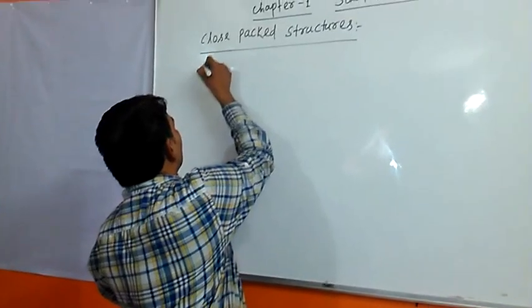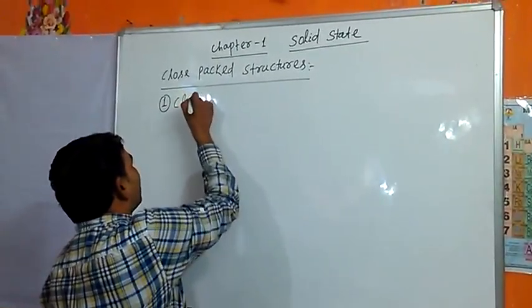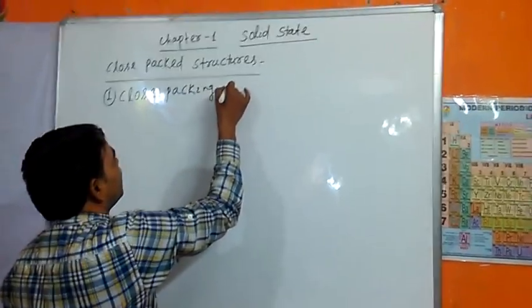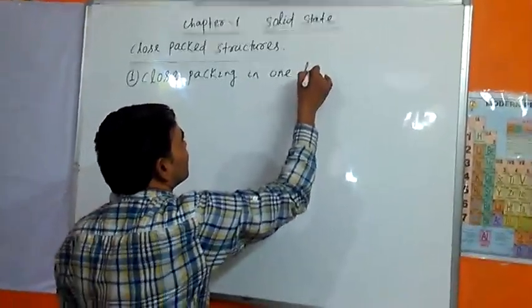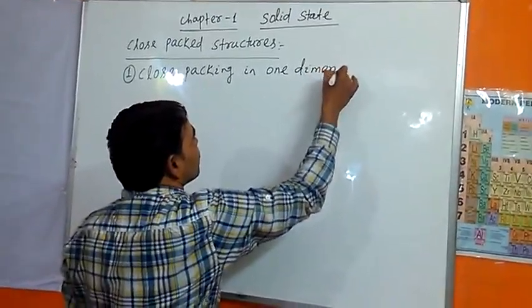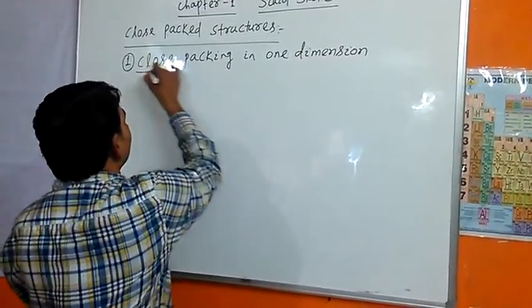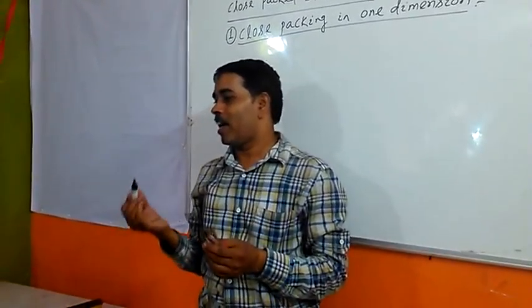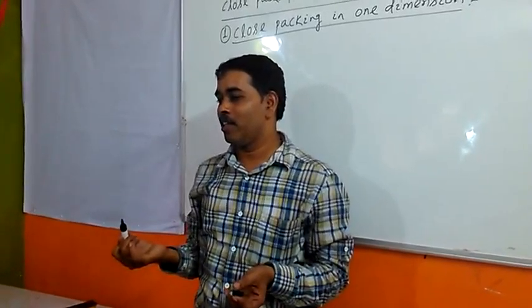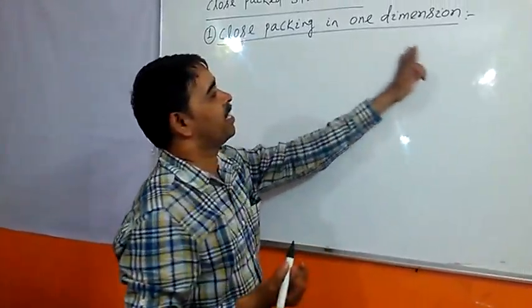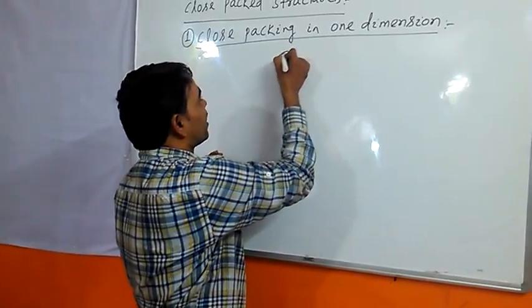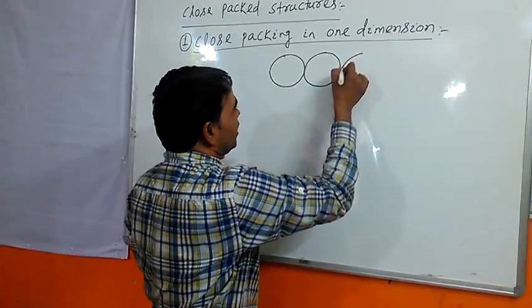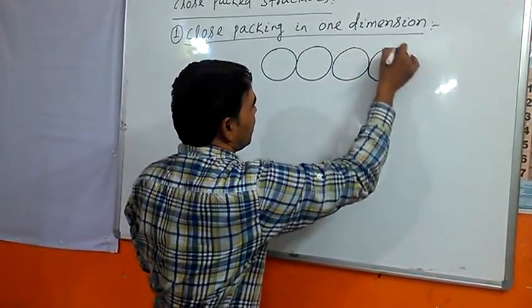So first conclude, close packing in 1 dimension. In 1 dimension, the constituent particles, either atoms, molecules or ions, are arranged in a single row. Every atom is considered as a sphere. So atoms are arranged in a single row, like this.